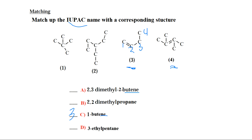For structure four, you number starting nearest to the functional group — the double bond — so: one, two, three, four. There is a substituent at carbon two and carbon three; they are two methyl groups. So it will be 2,3-dimethyl. The double bond appears at carbon two, and the longest chain has four carbons, making it a butene. Structure four goes to A.